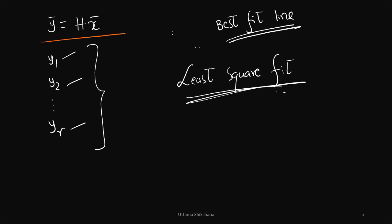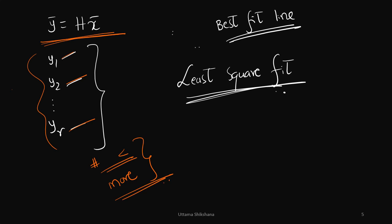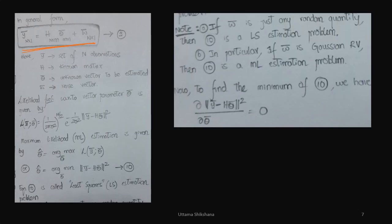We consider Y equal to HX. If you see this equation, we have Y1, Y2, up to Yr — many equations — while the number of unknowns is less. So the solution may or may not exist, and we need to do a best fit, which mathematically is the least square fit. In the generic form, the equation considered is Y equal to H·theta plus W, where X-bar is now theta-bar and W-bar is the noise.